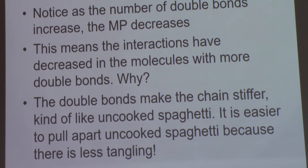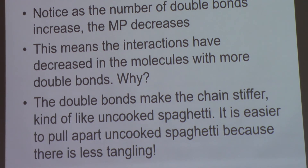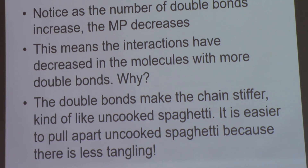As the number of double bonds increases, the melting point decreases because interactions between molecules decrease. Double bonds make the chain stiffer — it can't wiggle around and tangle as well. It's like uncooked spaghetti: easier to pull apart than cooked spaghetti because the strands are less tangled. Stiffer molecules are easier to pull apart, resulting in lower melting points.